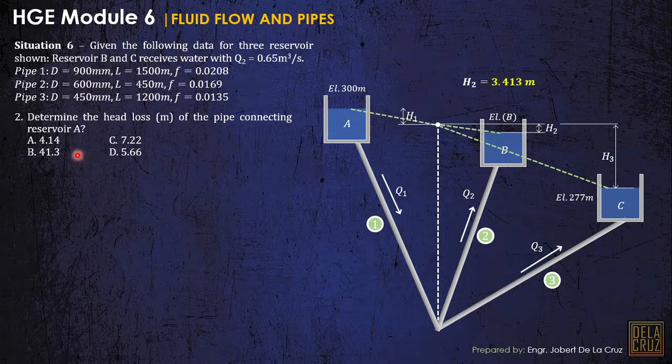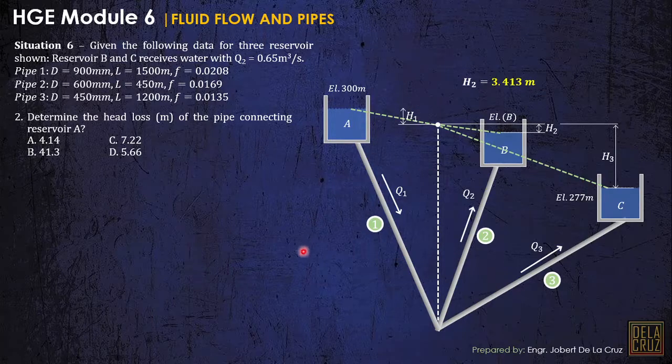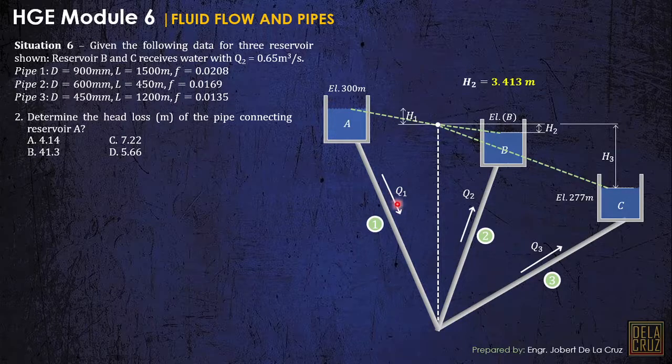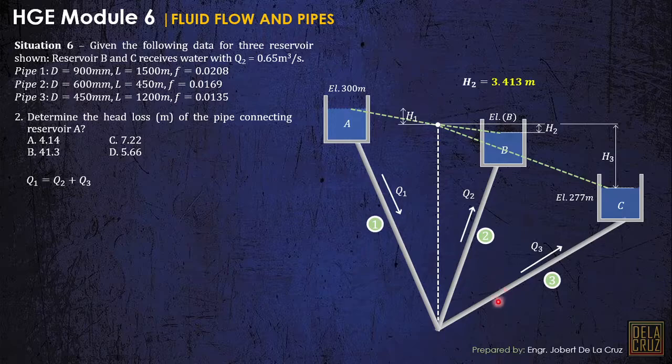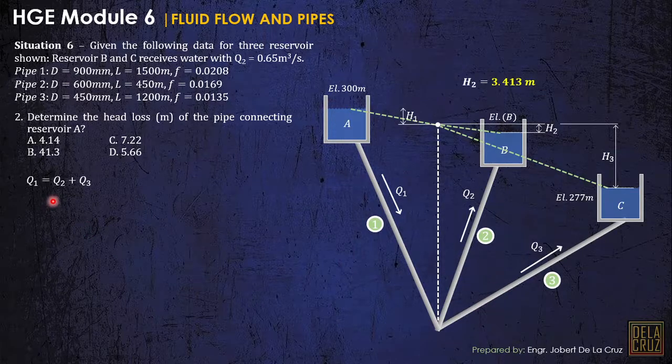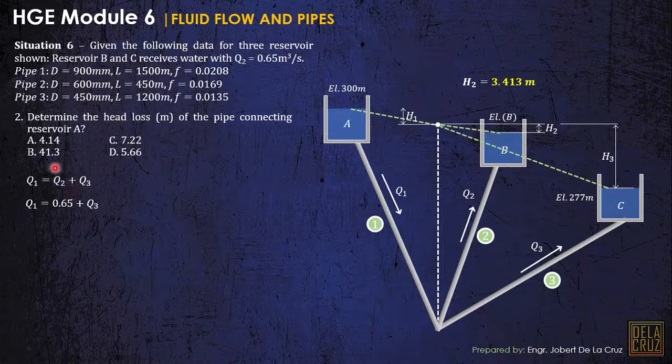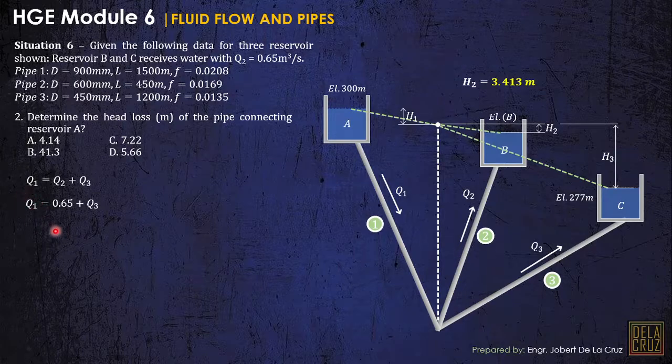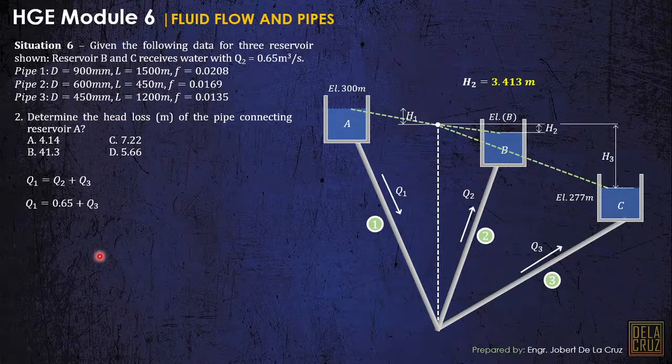So if we have the value of H sub 2, then we can eliminate things here and we can simplify our equation to just one head loss. This is the easiest solution. Determine the head loss of the pipe connecting reservoir A, so basically this is H1, head loss connecting reservoir A. To do that, the same approach as last time. As we can see, the discharge at A or discharge at 1 is equivalent to discharge at 2 plus discharge at 3. The water is distributed. So that would be our main equation.